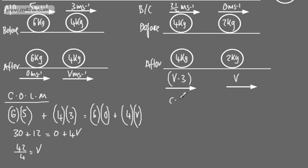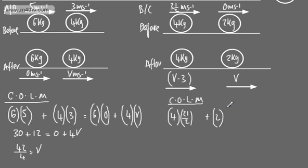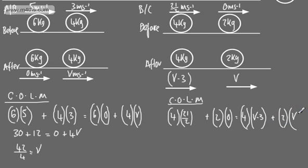Applying conservation of linear momentum — total momentum before equals total momentum after. Before: mass 4 × velocity 21/2, plus mass 2 × velocity 0. After: mass 4 × (V − 3), plus mass 2 × V.